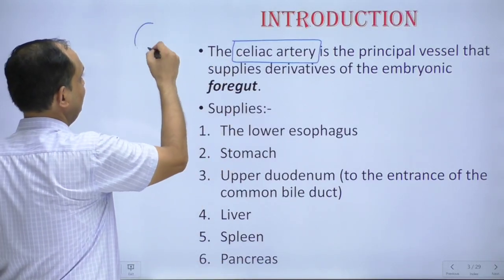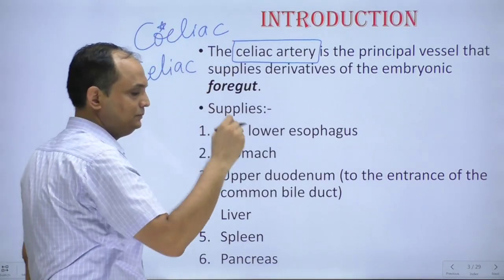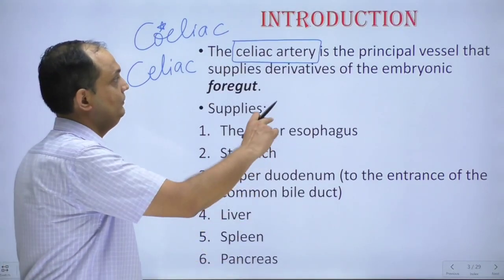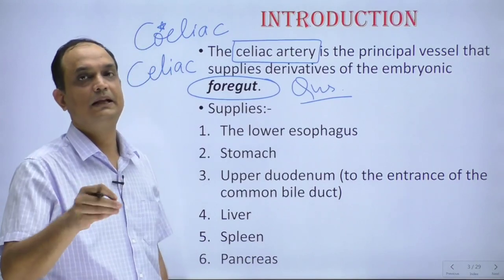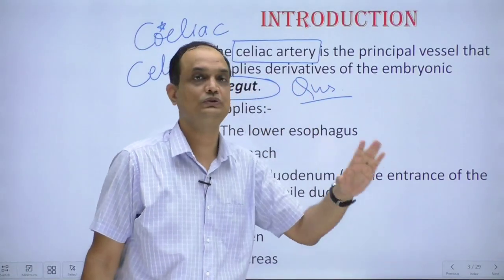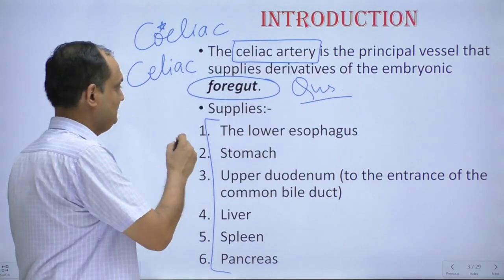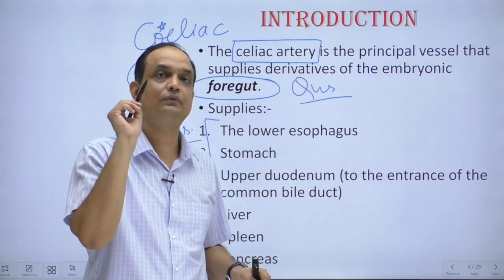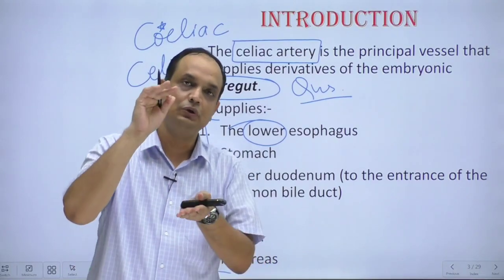The spelling of celiac can be written as C-O-E-L-I-A-C (British English) or C-E-L-I-A-C (American English) — both are correct. The celiac artery, or celiac trunk, or celiac axis, is the principal vessel that supplies the derivatives of the embryonic foregut. This is a key viva question: the blood supply of foregut derivatives comes from the celiac artery. The foregut derivatives include the lower part of the esophagus — though the entire esophagus is formed from the foregut, the celiac artery supplies only its lower part.